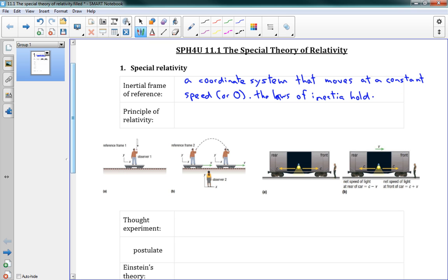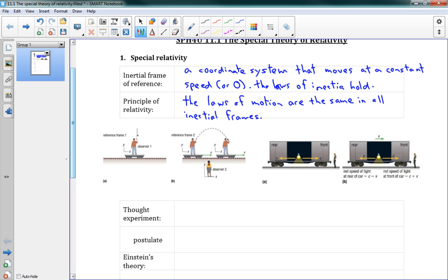And our principle of relativity here is, think way back when, relative motion, before we had any idea that light behaved in this strange way. The principle of relativity has been around for a long time, and it says that the laws of motion are the same in all inertial frames. So that principle has been around for a very long time, and it's sort of an assumption that we make that it doesn't matter what inertial frame you're in, the laws of physics should be the same.